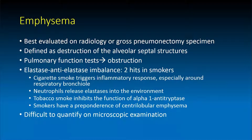This explains why smokers tend to have a predominance of centrilobular emphysema, because of the location of the inflammation and the enrichment of elastases in these centrilobular distributions.